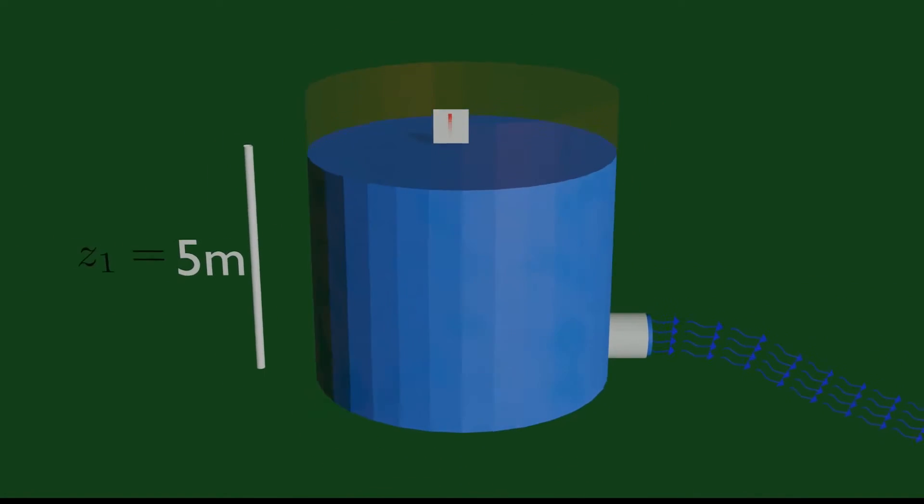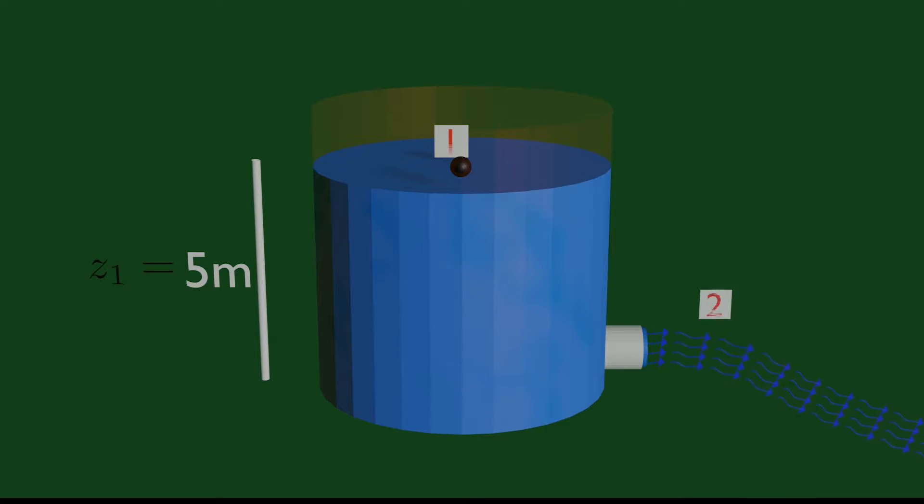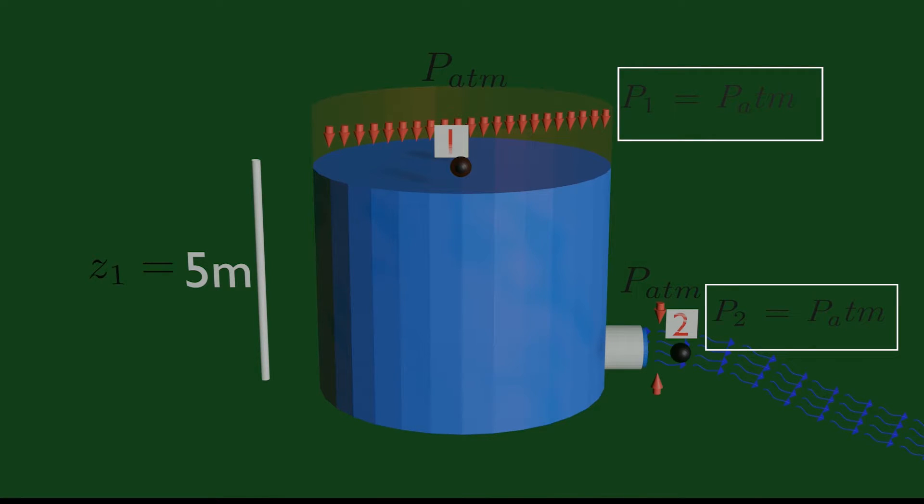We take point 1 to be at the free surface of water and point 2 at the bottom. The flow is laminar and locked. The atmospheric pressure acts at both point 1 and point 2, so both points are at atmospheric pressure.